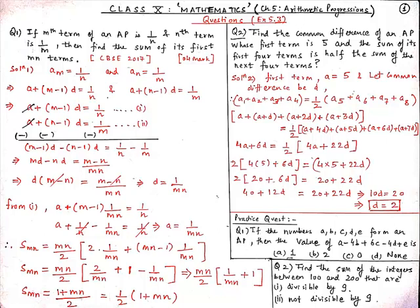From here we get 40 + 12d = 20 + 22d. So 10d = 20, therefore d = 2. Now practice these two questions mentioned on your screen and submit with a solution.